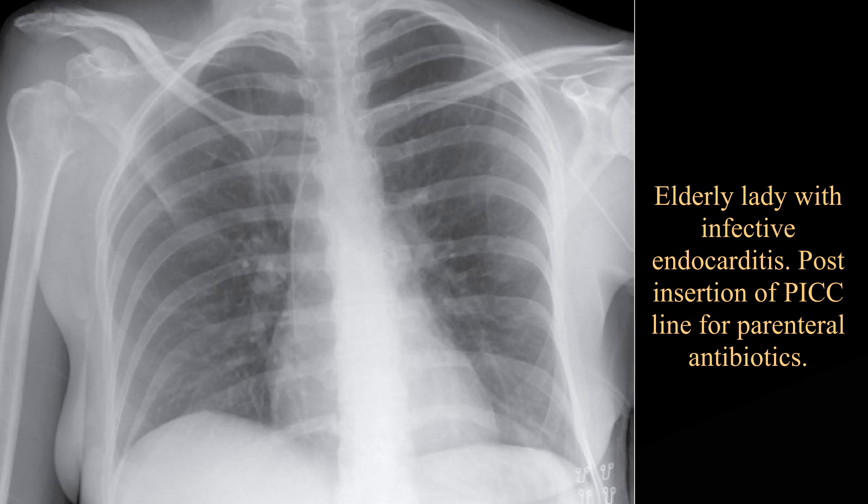This is a frontal chest radiograph of an adult female. The PICC line tip is projected over the right atrium. The patient should ideally have the line withdrawn under fluoroscopic guidance so that its tip lies at the cavoatrial junction.